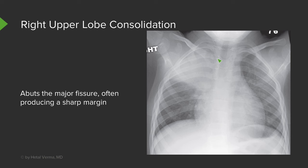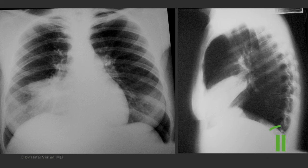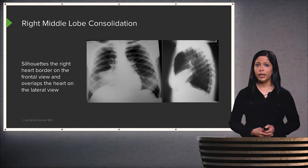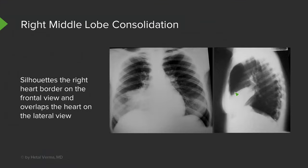This consolidation silhouettes the mediastinum on the right. On the frontal and lateral views, this is an example of right middle lobe consolidation. On the frontal view, the right heart border is silhouetted so we no longer see it. On the lateral view, a middle lobe consolidation overlaps the heart, making it appear brighter than normal — because the consolidation is located adjacent to the heart anteriorly. This is very typical of a right middle lobe consolidation.